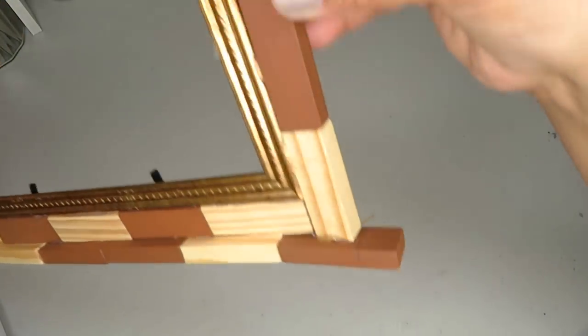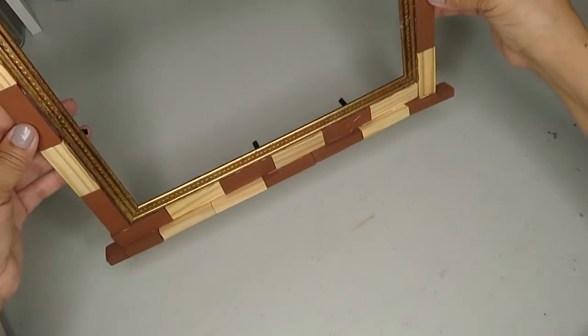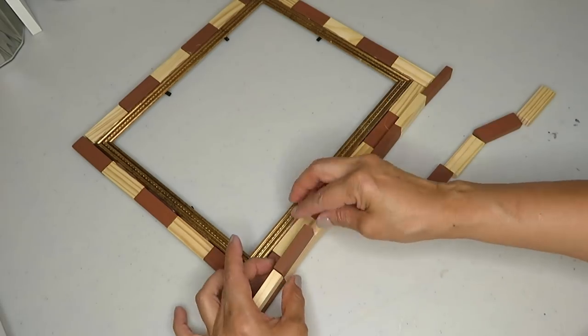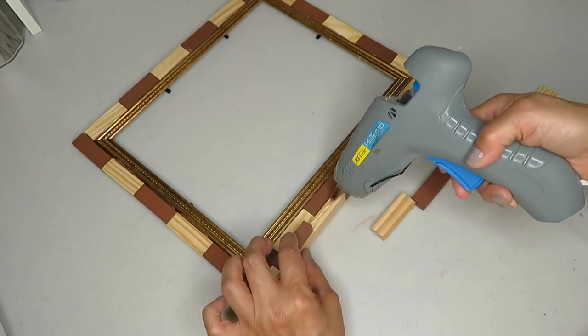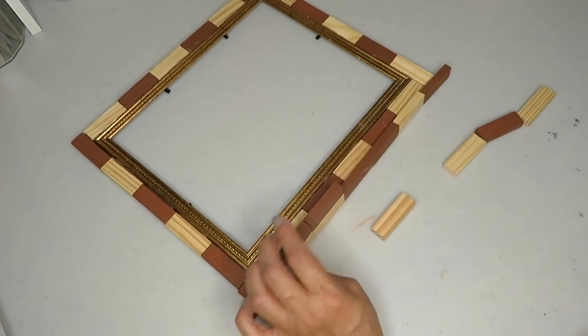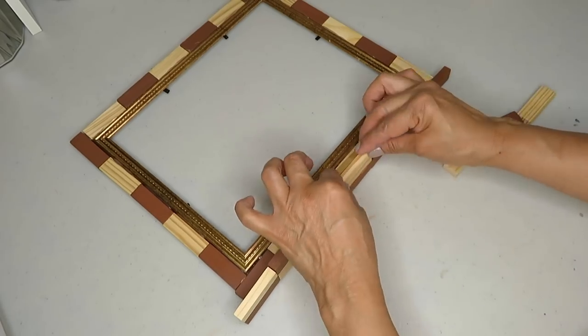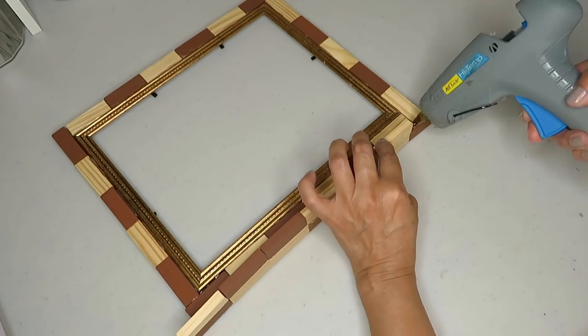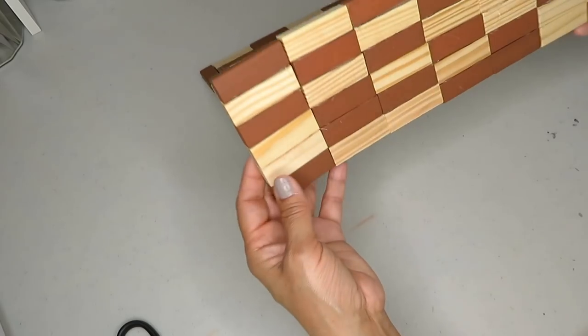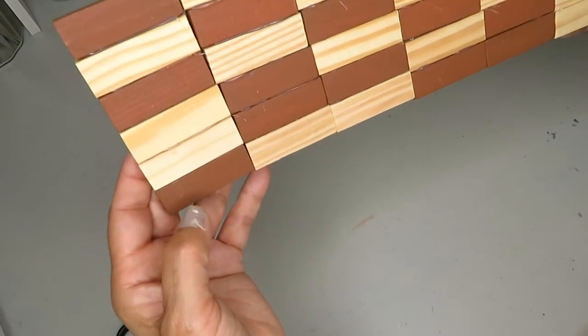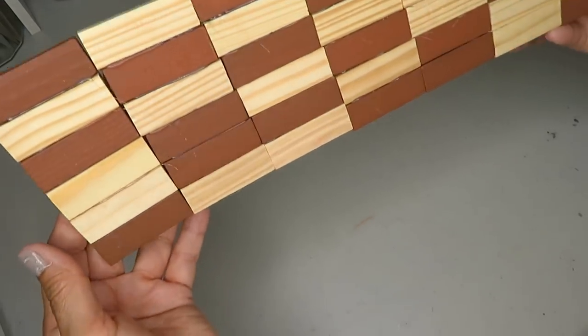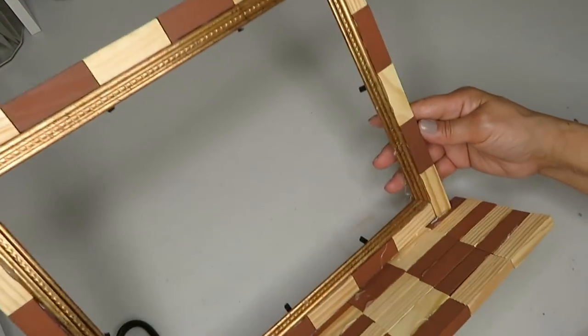I'm done with the first row and I'm gonna continue adding five more rows to this shelf. I'm done adding all the rows and there is a total of six rows. I could have stopped here but I decided to add some trimming to the edge of my shelf.